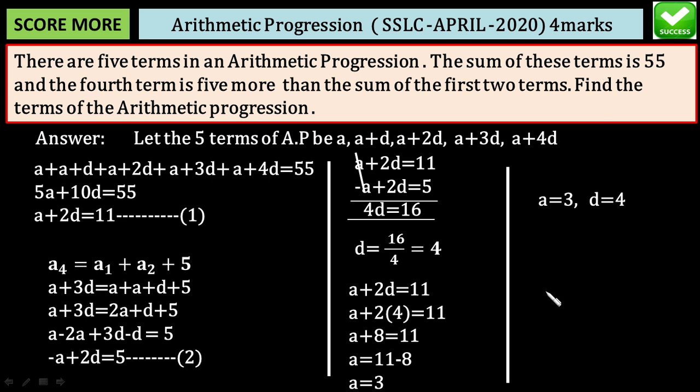Now we have to find the arithmetic progression. First term is 3. Then add d value difference 4, we get 7. Then add 4, we get 11. Add 4, we get 15. Add 4, we get 19. This is the arithmetic progression series.